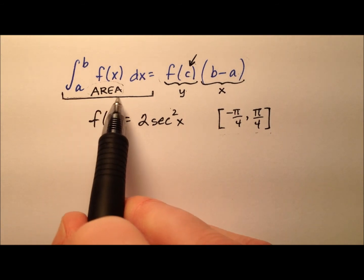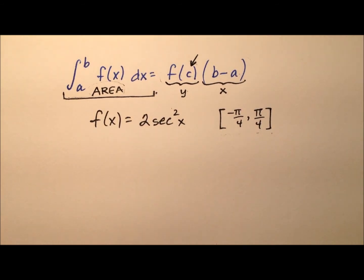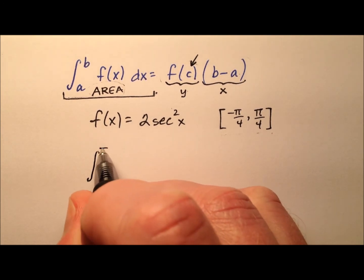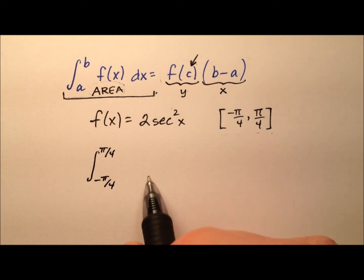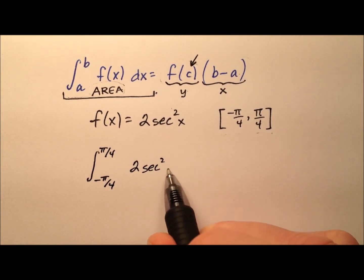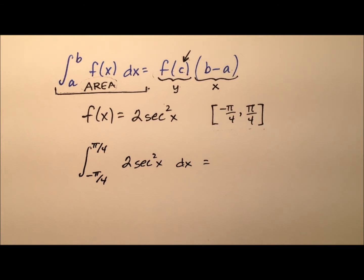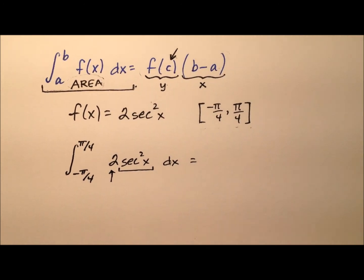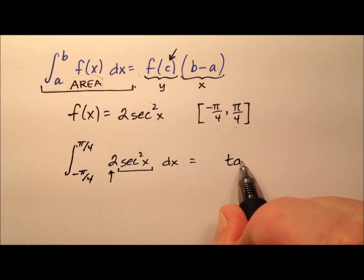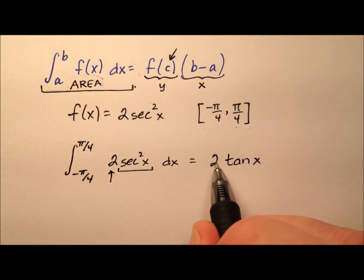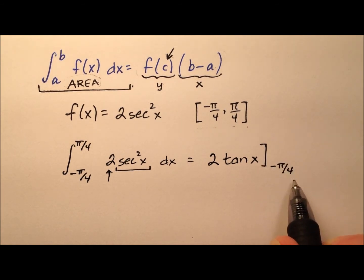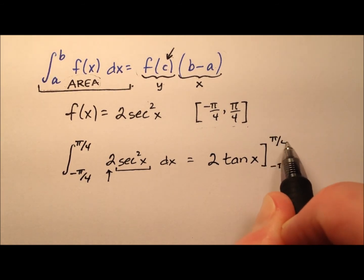Let's go ahead and compute the left side of the equation — this definite integral. We're going from negative pi over 4 to positive pi over 4 of 2 secant squared x with respect to x. The 2 is just a constant, so I'm really focused on integrating secant squared, and that's nice because the integral of secant squared is just tangent x. So the 2 can just come along for the ride, giving us 2 tangent x, evaluated from negative pi over 4 to pi over 4.